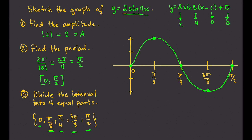To summarize: first, we find the amplitude, which gives us the maximum height of the wave. Then we find the period, because the period determines how long one cycle of the graph will be. Next, we divide the interval into 4 equal parts. Since the period is π/2, that's 0 to π/2 divided into 4 parts: 0, π/8, π/4, 3π/8, and π/2. After that, we sketch the graph — starting at the origin, the next point is the highest point, then back to center, then the lowest point, then back again. Just connect the dots, and that's it.